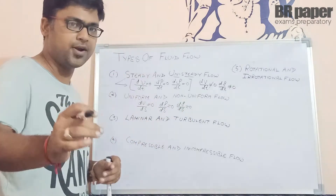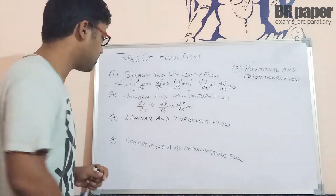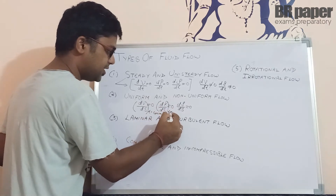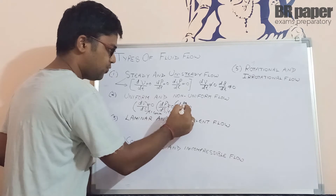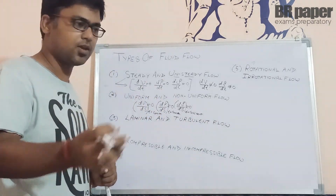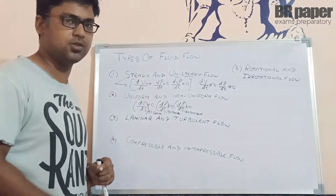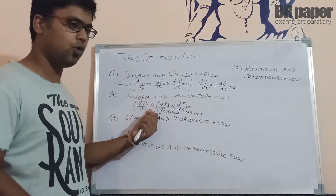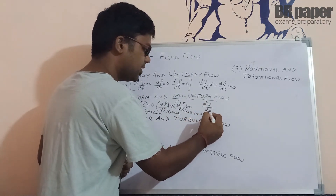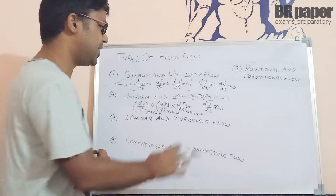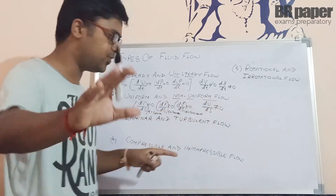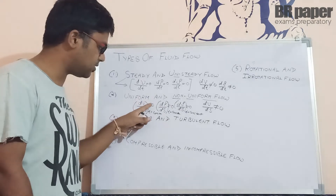At the same instant of time, moving from one point to another, if dv/ds = 0 and dp/ds = 0 at the same instant of time — meaning properties are not changing from point to point — it is not a function of space, so it is uniform flow. If dv/ds is changing from point to point and is not equal to 0, then it is non-uniform flow. Similarly, if dp/ds or dρ/ds are not equal to 0 they represent non-uniform flow; if equal to 0 with respect to space, it is uniform flow.